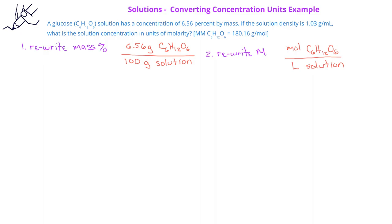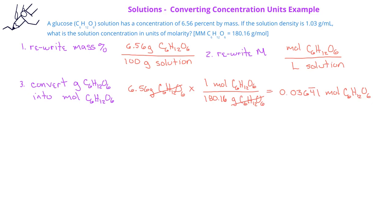You should recall that it's fairly easy to convert grams of glucose into moles of glucose using the molar mass for glucose. So we would take 6.56 grams of glucose multiplied by the conversion factor for the molar mass, 1 mole of glucose over 180.16 grams of glucose, and that gives us a value of 0.03641 moles of glucose.